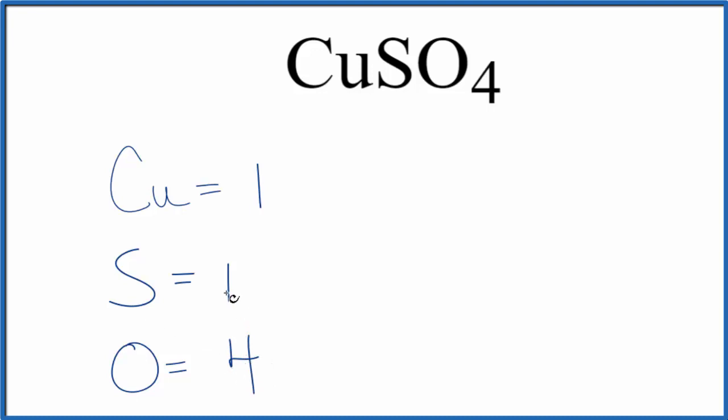If you add these up, 4 plus 1 is 5 plus 1, 6 total atoms in CuSO4.